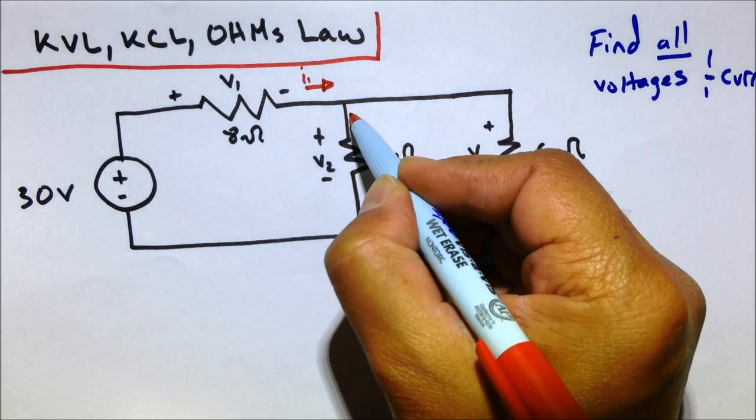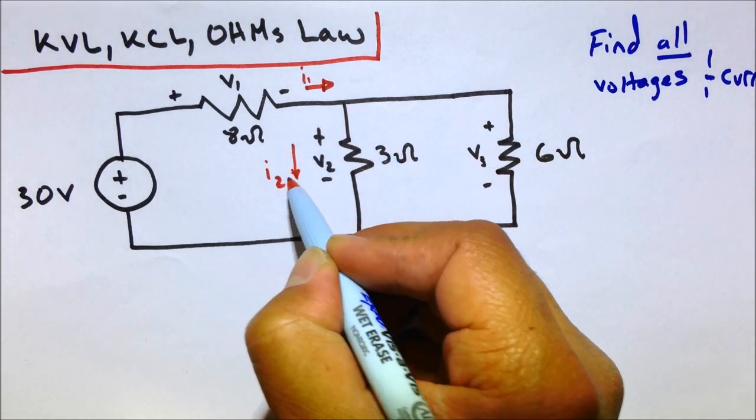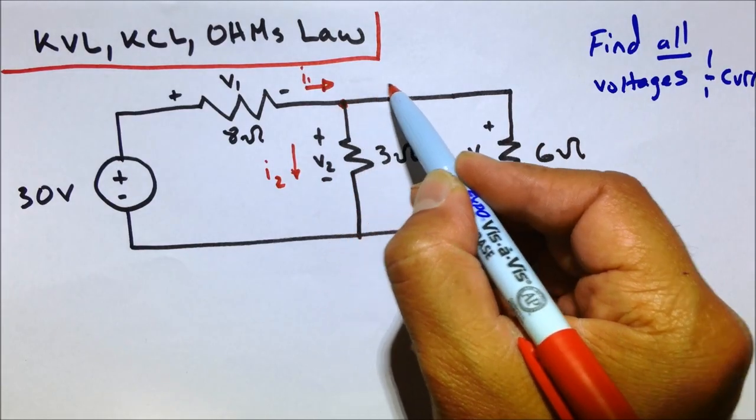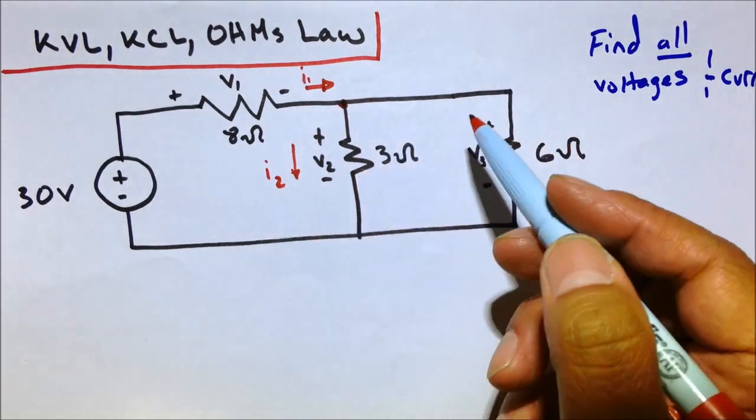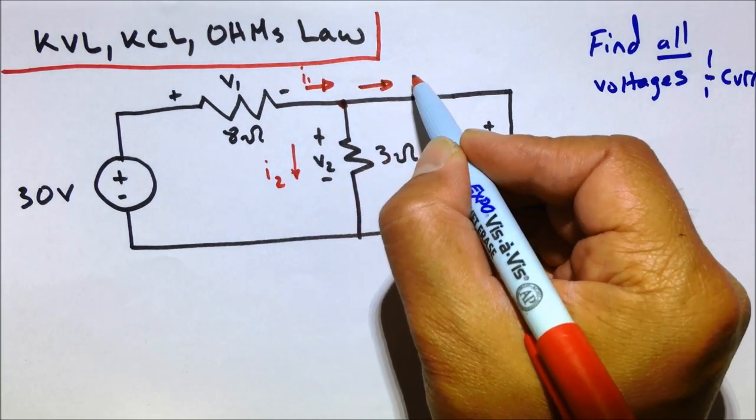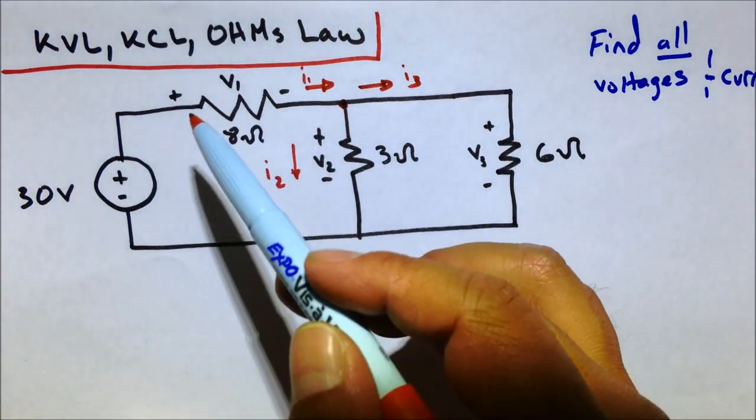And then we have the current going down this resistor, let's call that I2. It's coming down through here. And then there's a current going out of that node, or it could be going in, but I'm going to go ahead and point it this way, I3.